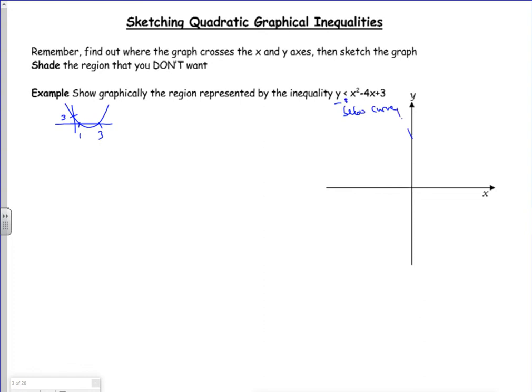So it's quite hard when it looks really small to draw the curve dashed. So there's a 1, there's the 3, there's the 3. I want below the curve, I want the y values that are below the curve, so I shade above the curve.